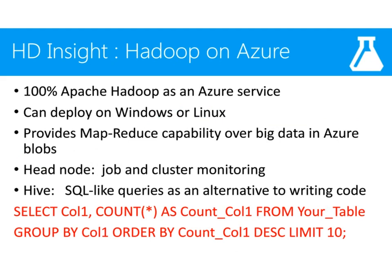Let's now get on to HD Insight. HD Insight is Microsoft's Hadoop offering on Azure — it's basically 100% Apache Hadoop as an Azure service. It can deploy on Windows and Linux. Like any Hadoop service, it provides MapReduce capability over big data in Azure Blobs. Let me launch a screen share to show you two things: one, how to commission a cluster, and two, how to log in to the head node of the cluster so that you can look at job and cluster progress and also monitor jobs on the fly.